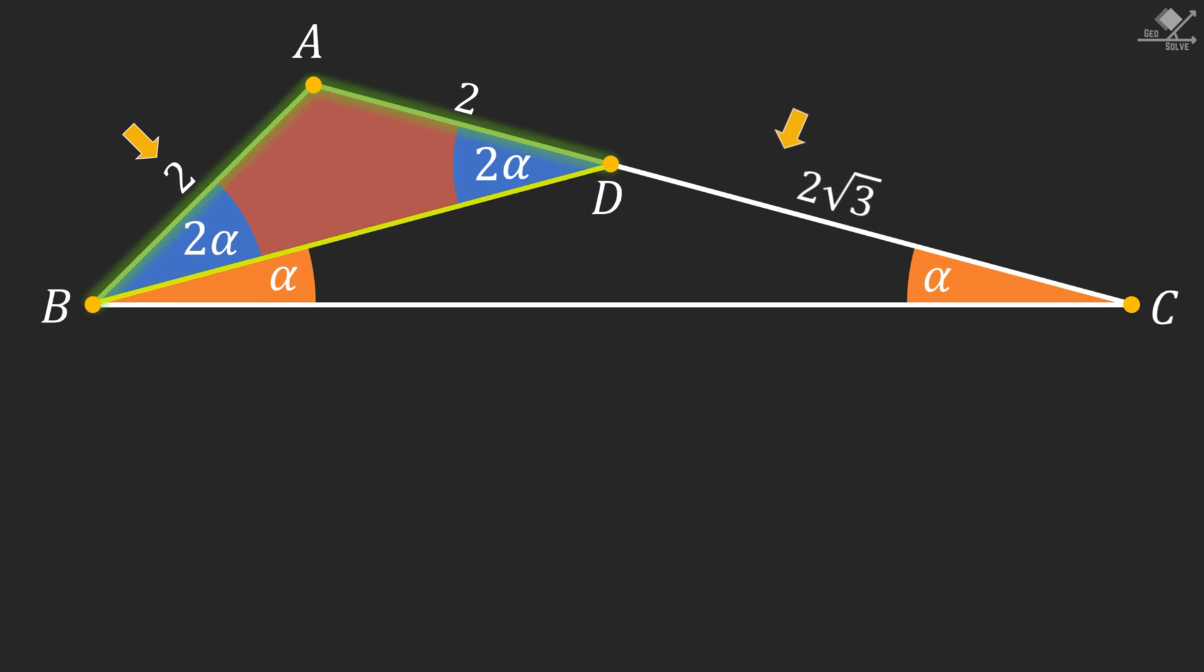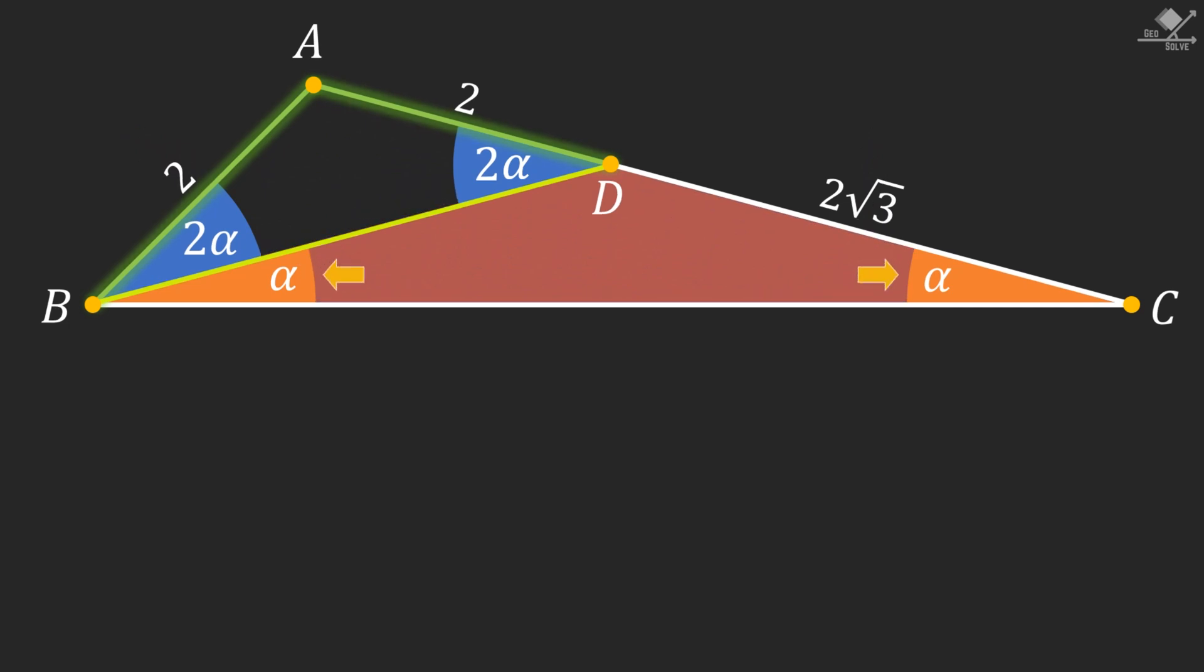And that makes line segment DC 2 root 3 units. Notice that we have another isosceles triangle. So we should have equal side lengths. Then line segment BD will also be 2 root 3 units.